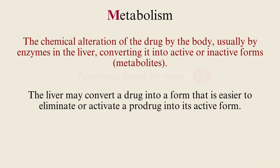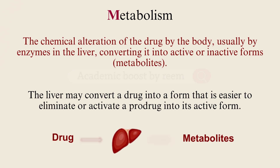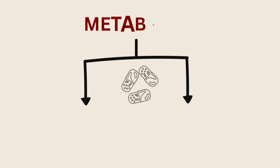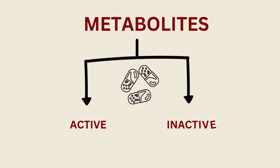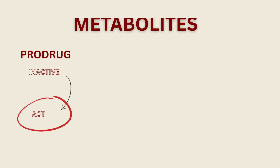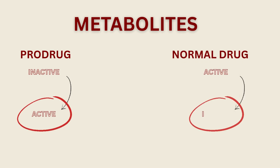Metabolism occurs mainly in the liver because it contains the enzymes necessary for the process, and we convert the drug into metabolites. Those metabolites could be active or inactive — active in the case of a prodrug, and inactive in the case of a normal drug.